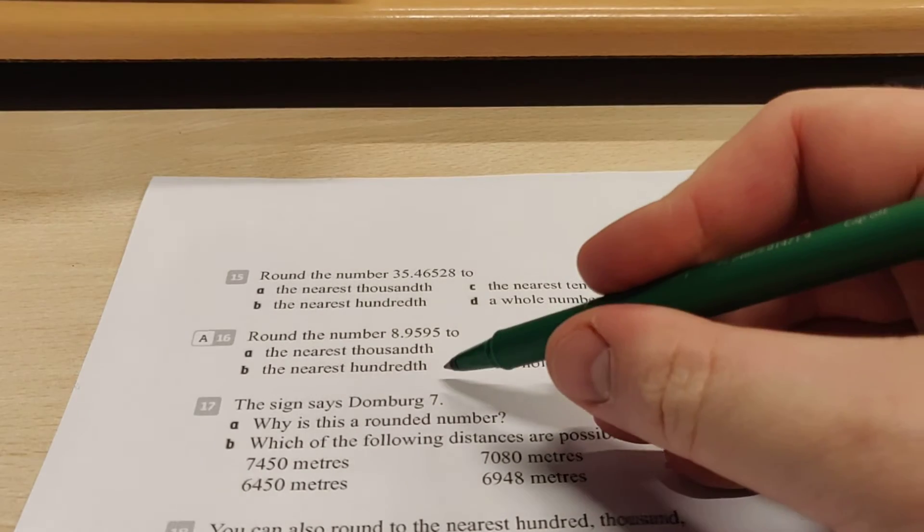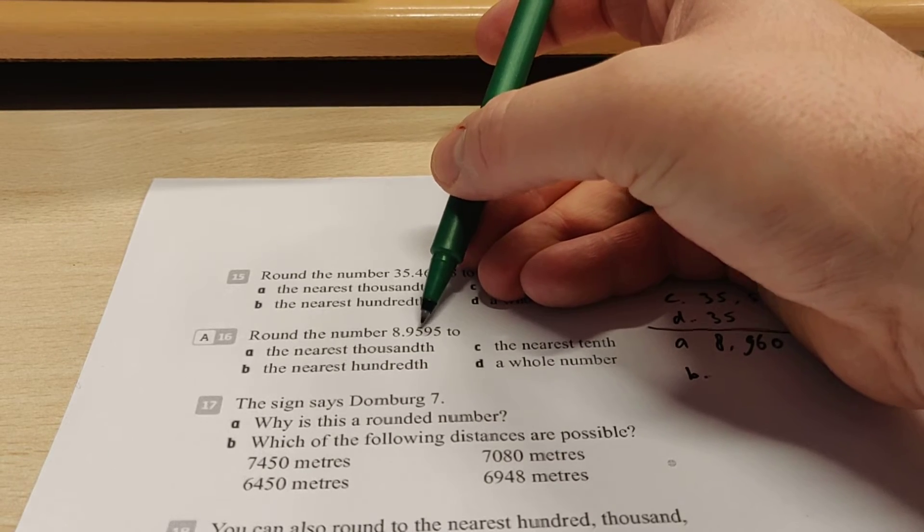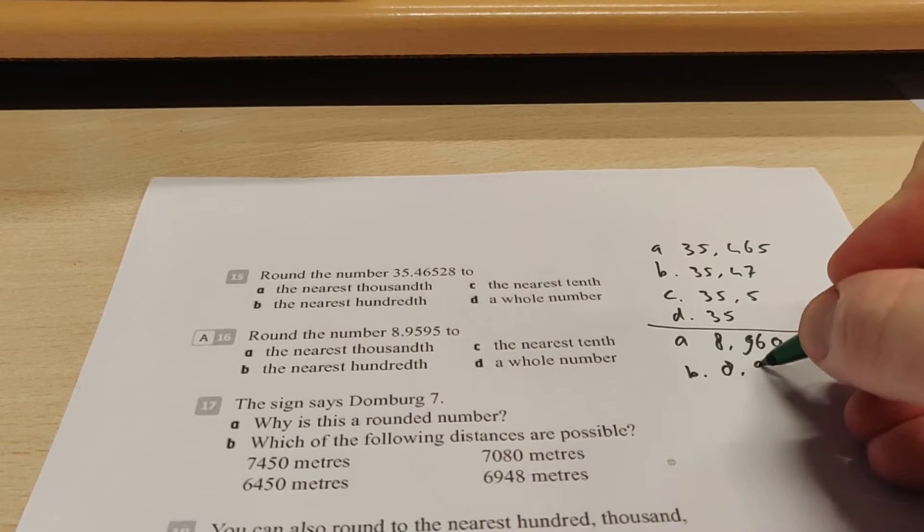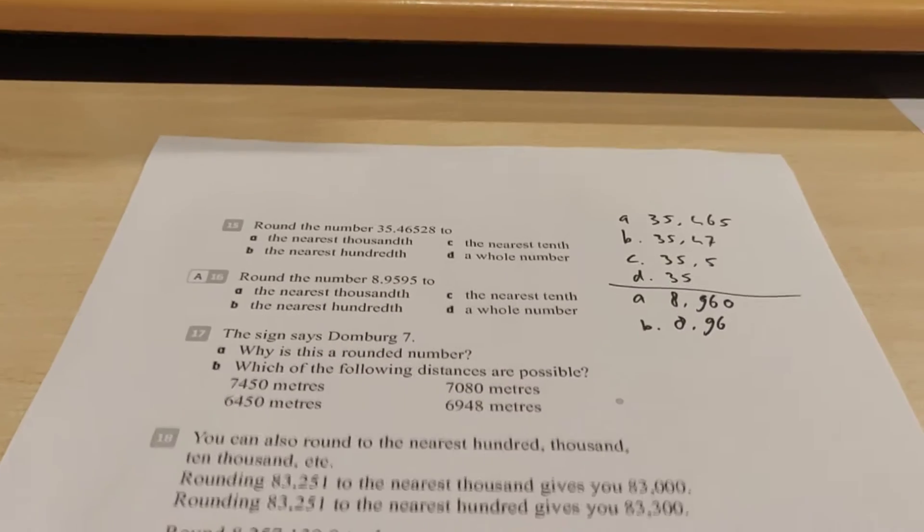Exercise B, you need to round off to the nearest hundredth. So that's this number here, this 5. The next one is a 9. So this one goes up, so it's 8.96. So you see you get actually the same answer if you round off to thousandths or hundredths.